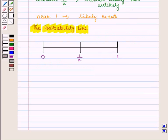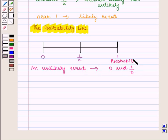We can represent probabilities on a number line as shown. An unlikely event would have a probability between 0 and 1 by 2, and it would be near 0.